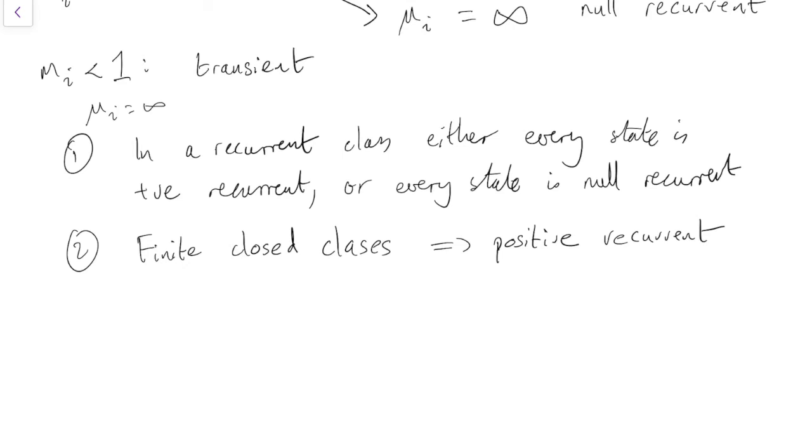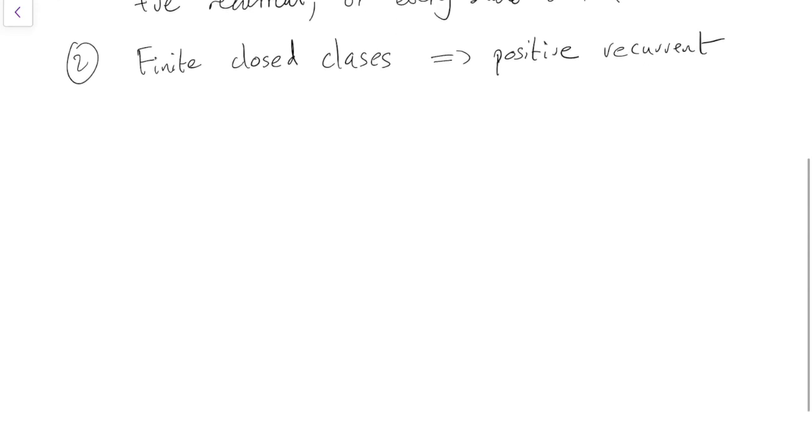So, if we put together what we've just written here, together with what we saw in the previous subsection, just to summarize: finite closed classes are positive recurrent, that's what we just said. Non-closed classes we mentioned in the previous subsection, they are transient.